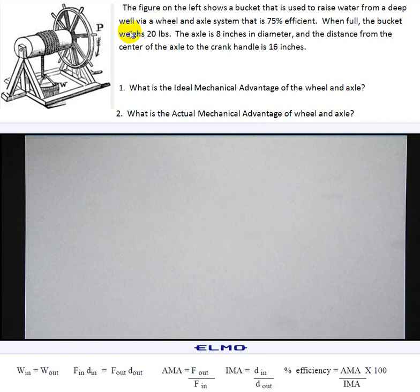When full, the bucket weighs 20 pounds. The axle is 8 inches in diameter and the distance from the center of the axle to the crank handle is 16 inches.